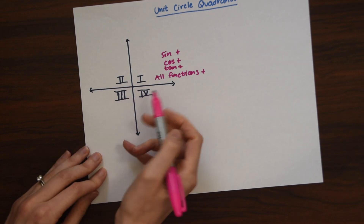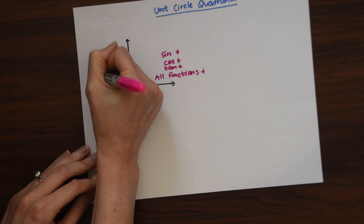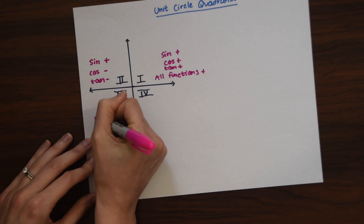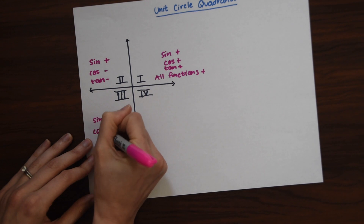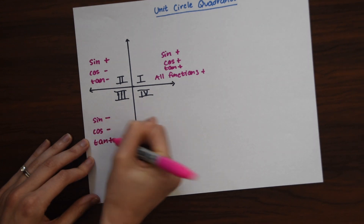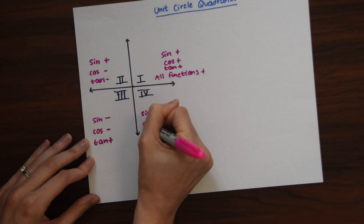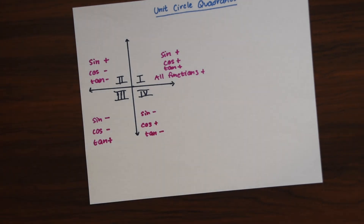In the second quadrant, only sine is positive — cosine is negative, tan is negative. The third quadrant: sine is negative, cosine is negative, and tan is positive. And for the fourth quadrant: sine is negative, cosine is positive, and tan is negative. It's important to know this to answer questions related to the unit circle.